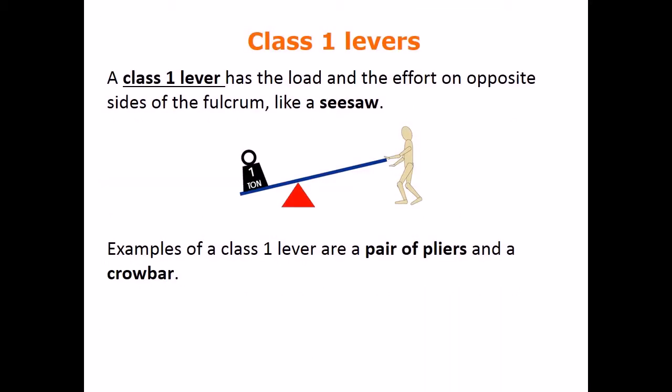There are three classes of levers. What are class 1 levers? A class 1 lever has the load and the effort on opposite sides of the fulcrum, like a seesaw. Examples of a class 1 lever are a pair of pliers and a crowbar.